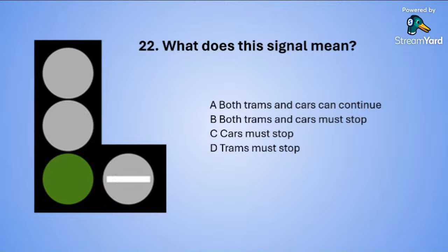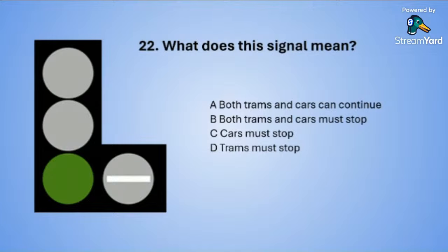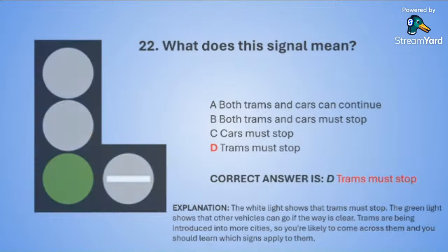The white light shows that trams must stop. The green light shows that other vehicles can go if the way is clear. Trams are being introduced into more cities so you are likely to come across them and you should learn which signs apply to them.